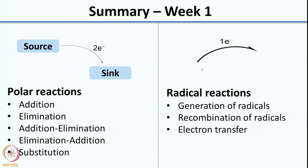We then looked at radical reactions, where you have 1-electron transfer, shown using a single-headed fish hook arrow. We looked at generic examples of arrow pushing for generation of radicals, recombination of radicals, and electron transfer, as well as specific examples to rationalize products. Week 1 also covered basic concepts such as inductive effect, resonance effect, and hyperconjugation.